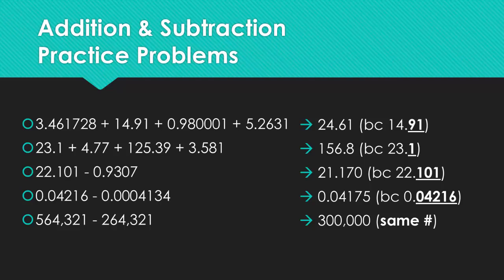For the third answer, you should have 21.170 because the original number 22.101 has 3 decimals. For the fourth problem, you should get 0.04175 because you're using the number 0.04216. That one only has 5 decimals.